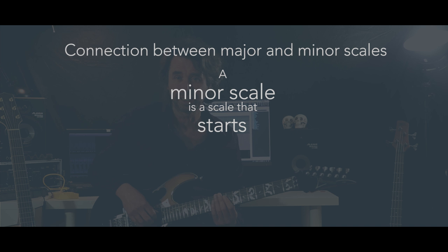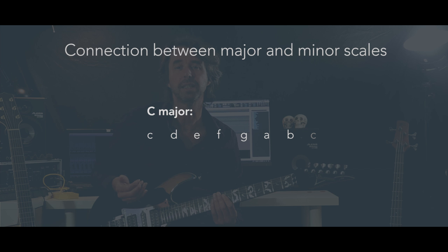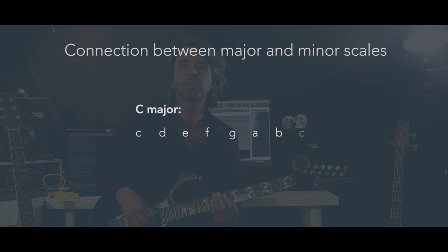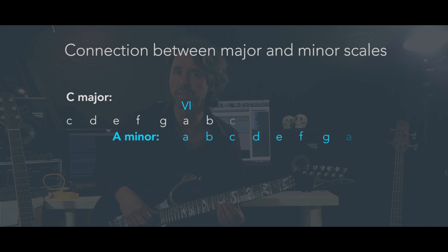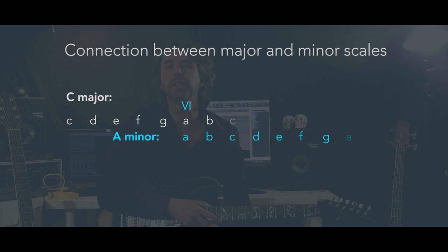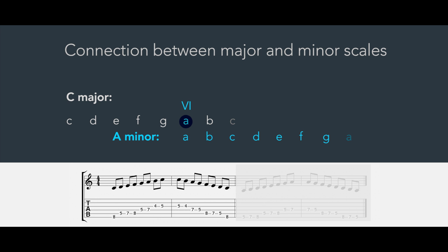A minor scale is the scale that starts on the sixth note of a major scale. So when we look at the C major scale, we see that the sixth note is the note A. And when we start the scale on the sixth note instead of the first note, we are creating an A minor scale. So the C major scale and the A minor scale are very much connected — they use exactly the same notes, only the starting point is different, resulting in a different sounding scale.